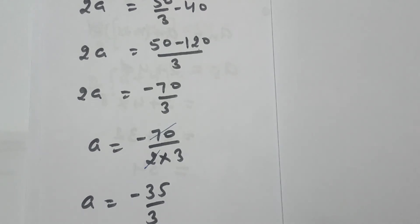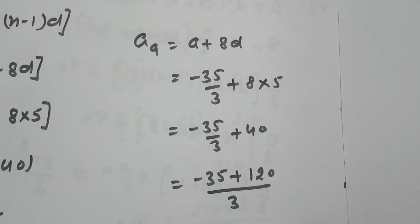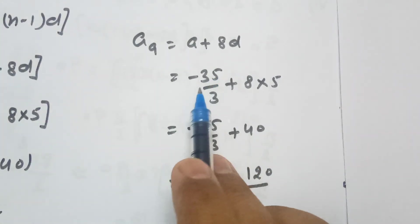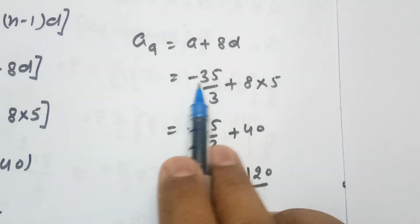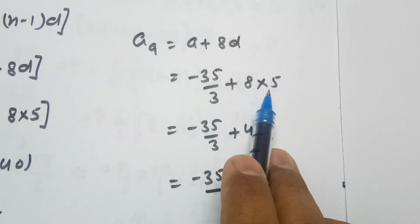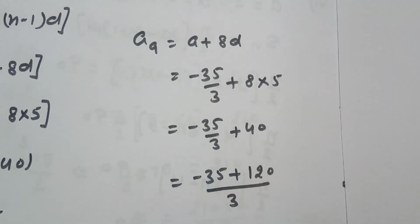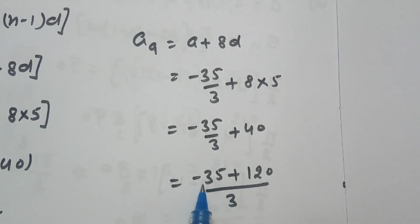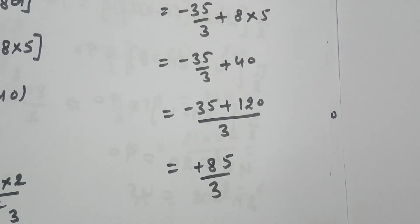Now, with a calculated and d already given, we will find the 9th term. The 9th term of this AP equals a plus 8d. A is minus 35 by 3 and d is 5, so 8 into 5 is 40. Taking LCM of 3, this becomes minus 35 plus 120 over 3, which equals 85 by 3.